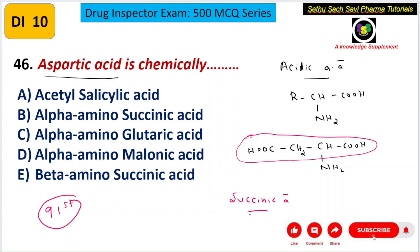This dicarboxylic acid parent chain is succinic acid, and the carbon bearing the amino group is called the alpha carbon. Since an amino group is attached at the alpha carbon, the correct answer is alpha amino succinic acid — choice B.